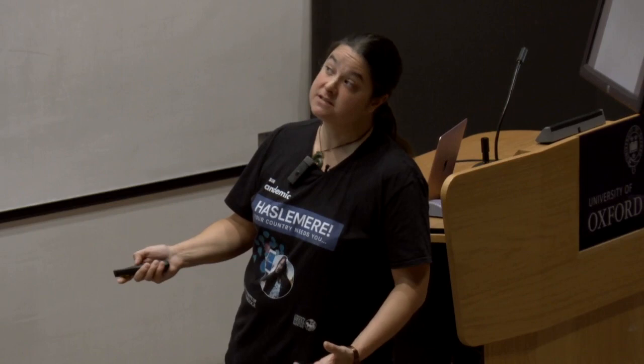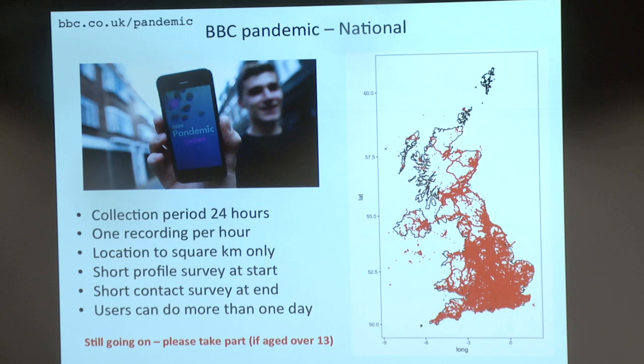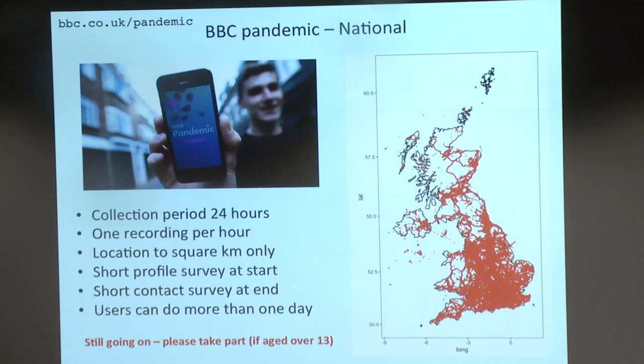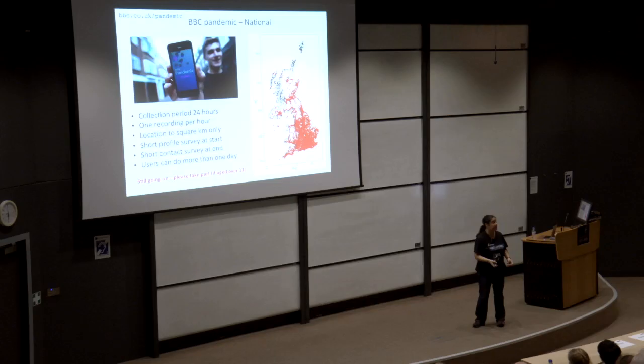The collection period is 24 hours from when you press go — you need to be 13 or over. It records once per hour where you are, down to square kilometer, so it's not super creepy. There's a short survey at the start with a few questions about yourself, and a contact survey at the end — how many people did you actually interact with over the last 24 hours, and a little about them: was the context work, school, or home? If you're happy with one kilometer per hour tracking, please go and do it. We need as many people as possible, from as diverse a group as possible — any random day is fine, even a boring day at home.